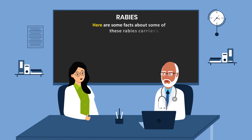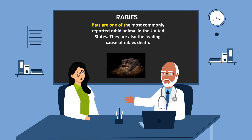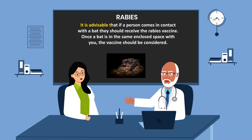Bats are one of the most commonly reported rabid animals in the United States and also the leading cause of rabies death. It is advisable that if a person comes in contact with a bat, they should receive the rabies vaccine. Once the bat is in the same enclosed space with you, the vaccine should be considered.